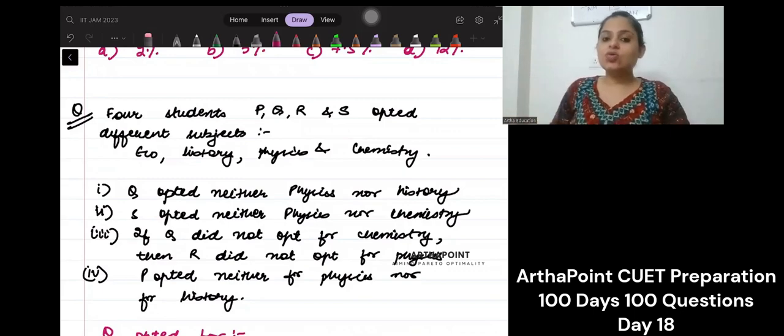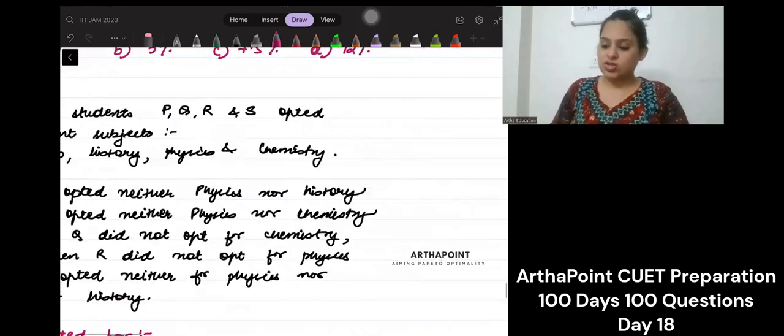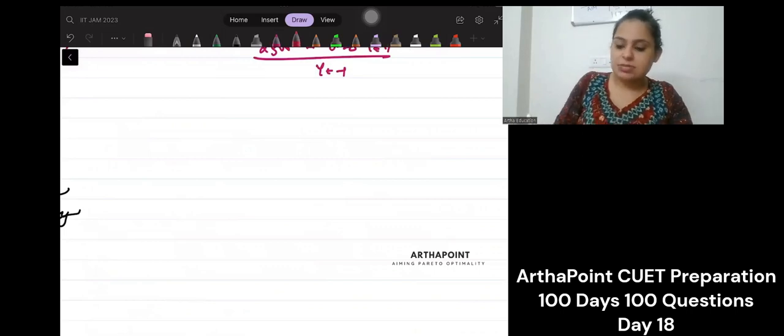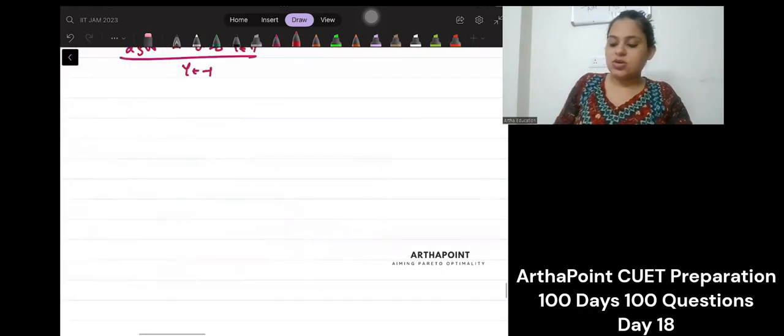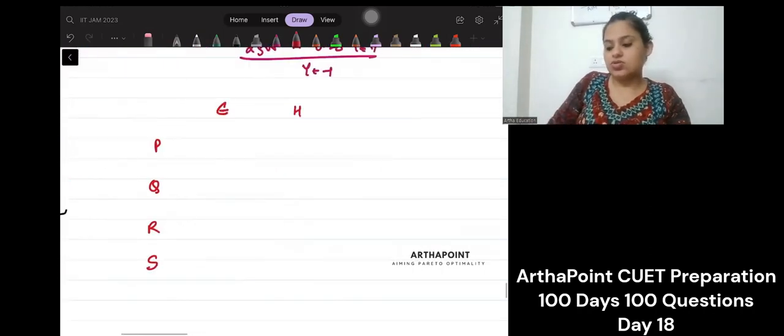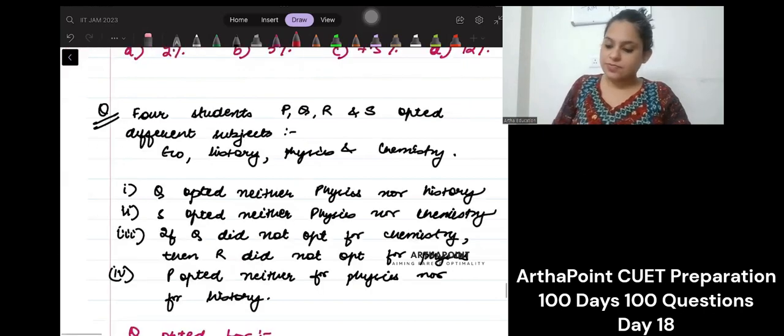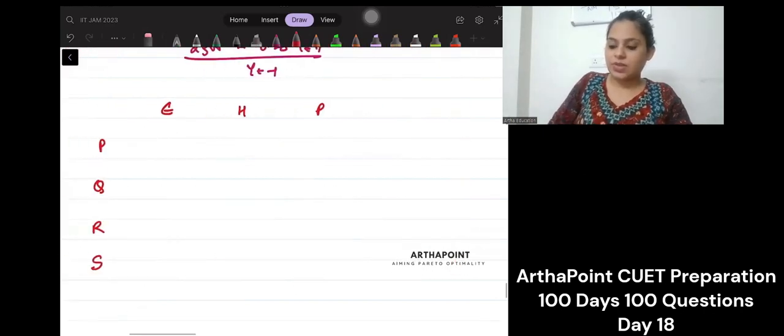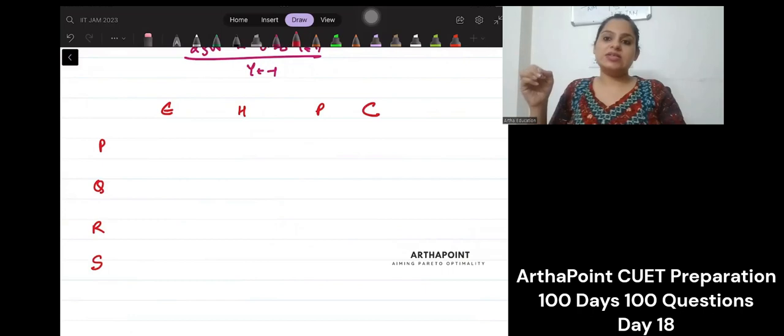So it says now Q opted neither physics nor history. So P, Q, R and S and there are four subjects: Eco, history, physics and chemistry. So P, Q, R and S, eco, history, physics and chemistry.